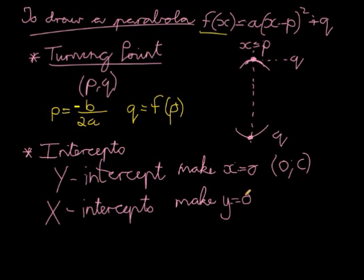For the x-intercept, I can have one intercept, or actually two intercepts because the graph comes back. I can have two intercepts, one intercept, or I can have no intercepts. In other words, the graph turns before it gets to the x-axis.